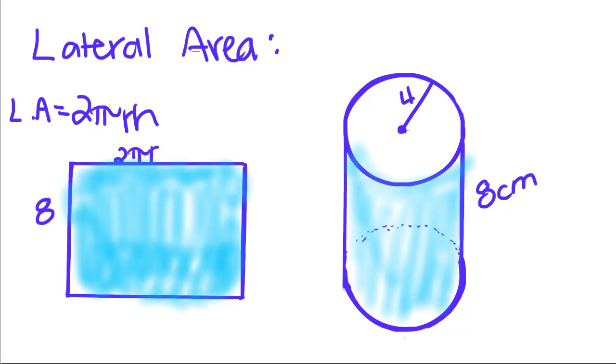If you look, the height of this rectangle is going to equal the height of this cylinder, so that's why it's 8 right here. And the width of this rectangle is going to equal the circumference of the circle, because if we unwrapped it, we'd have a width of 2πr. So that's why when we find lateral area, it's equal to 2πr times height.